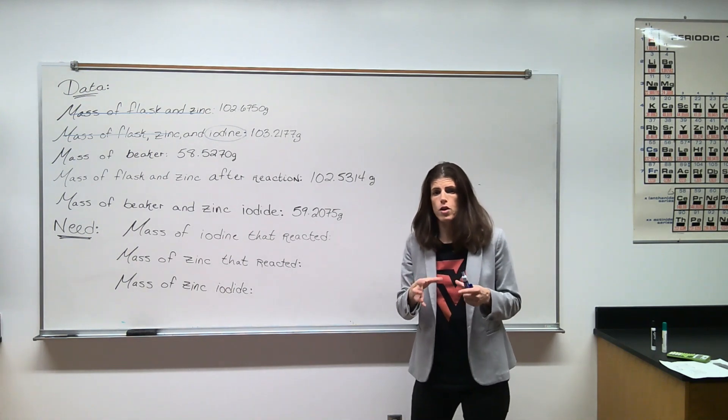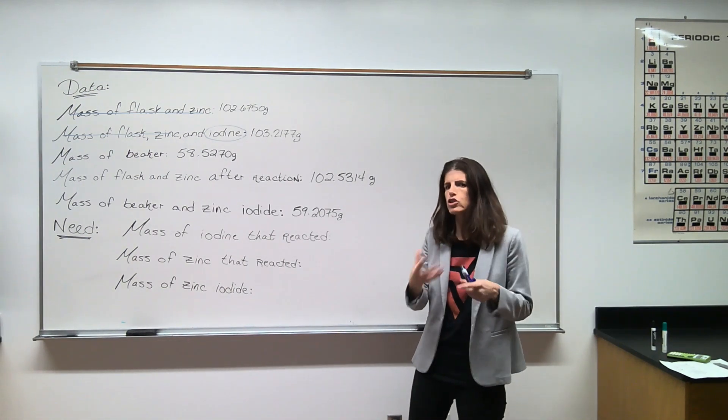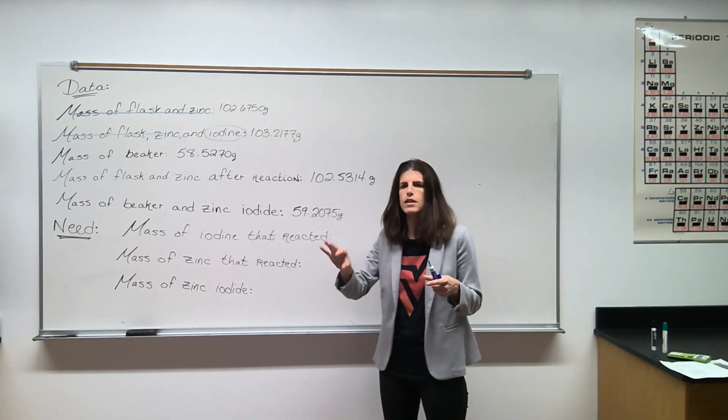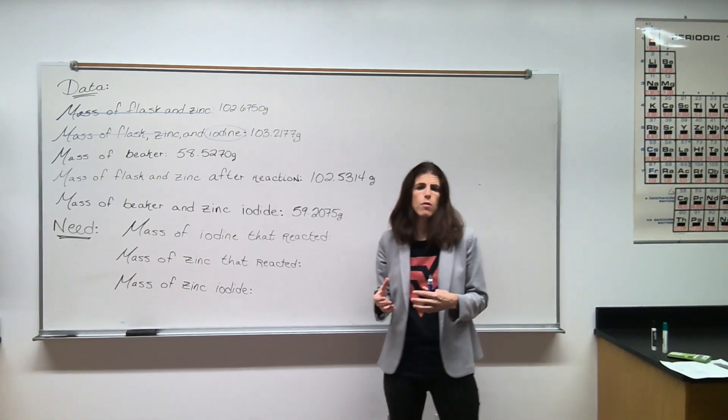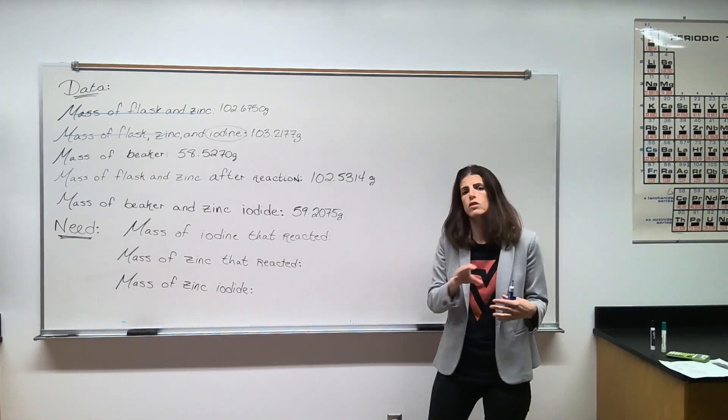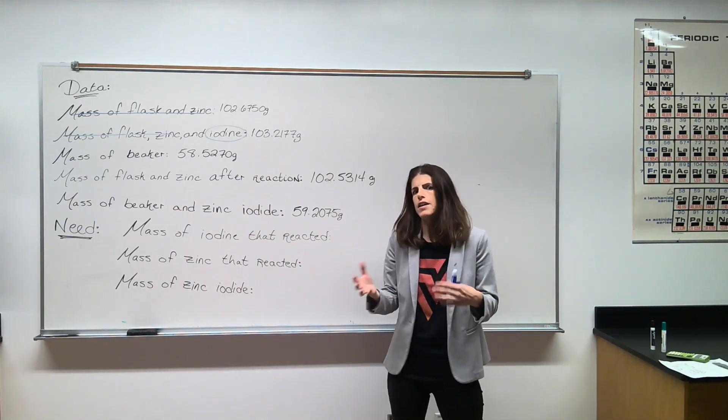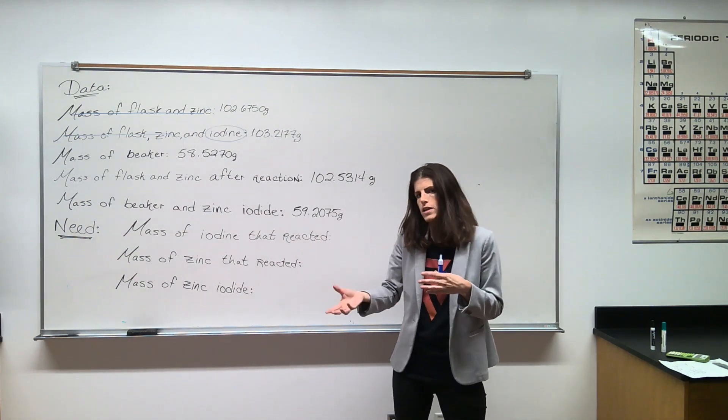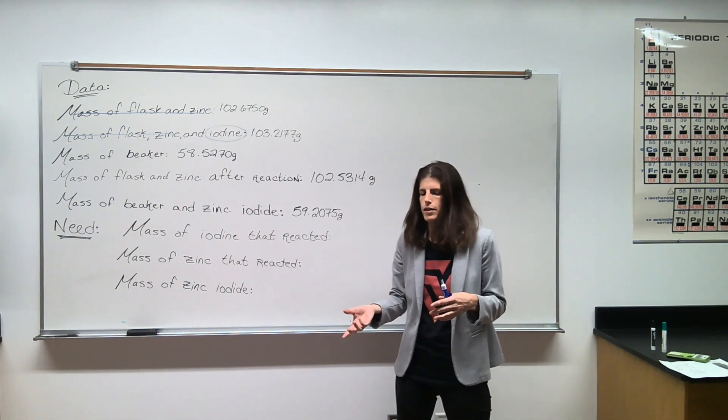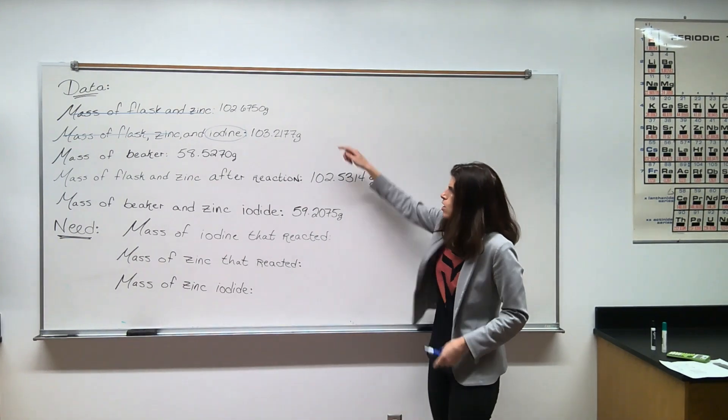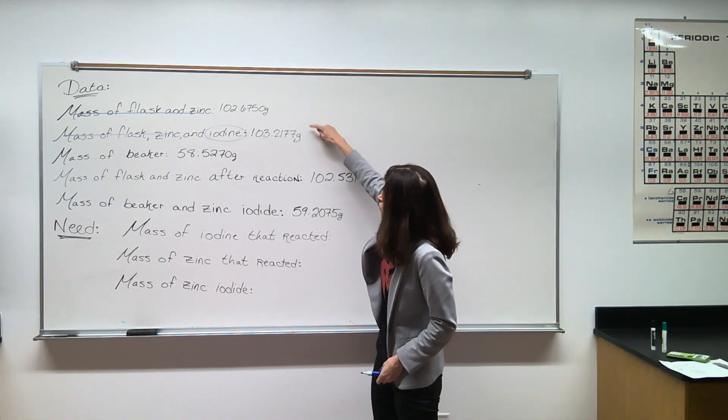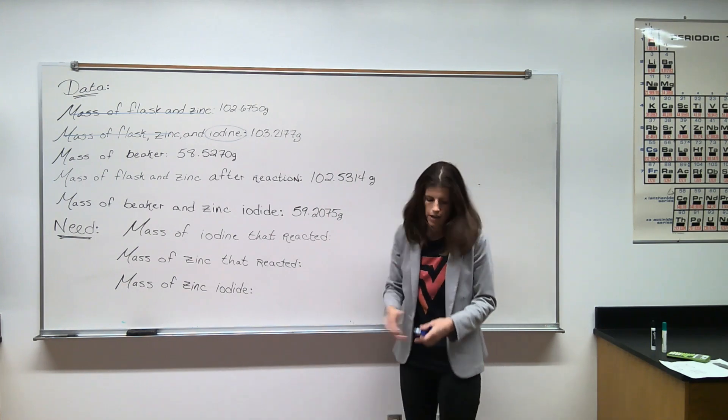The solution started with that purple brownish color, and then as we heated it, it turned colorless. That was an indication - that's how we know that the iodine all went into forming that product, that zinc iodide. So we can just subtract these two values and get the mass of the iodine that reacted.